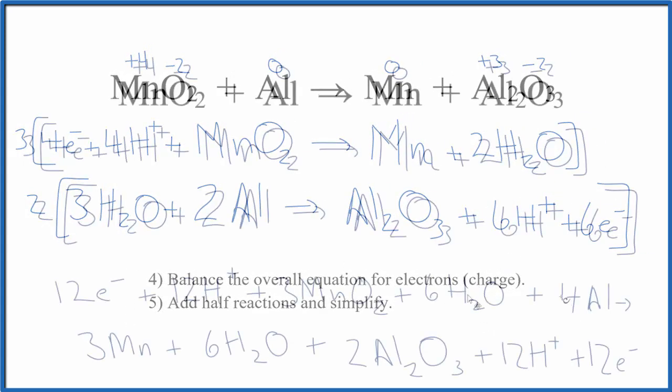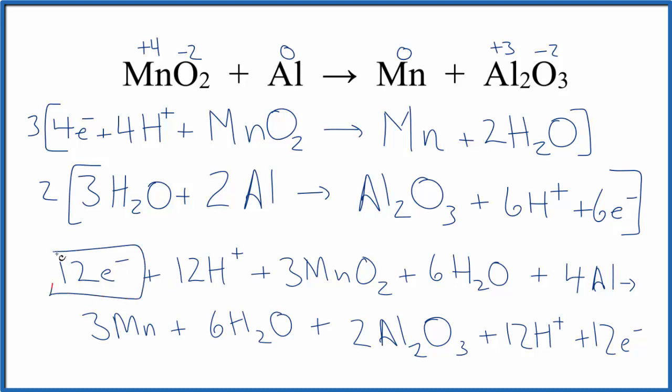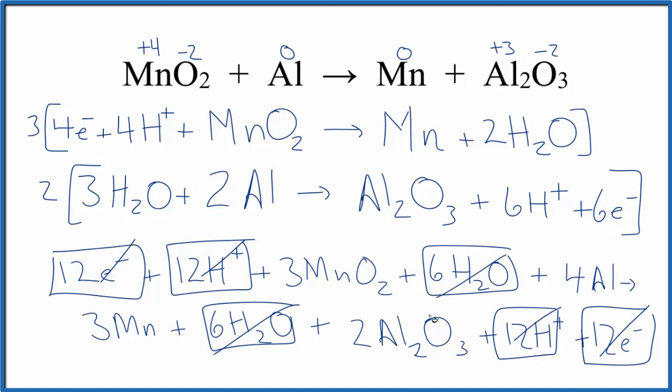Understand that all of these right here come from these right here. Then we have the products down here. Now that we have this, we can simplify. I see in the reactants, I have 12 electrons. Also in the products, get rid of those. 12 hydrogen ions, same in the products. Get rid of those. Water, six water molecules on each side. We can get rid of those. What's left is the balanced redox reaction for MnO2 plus Al.